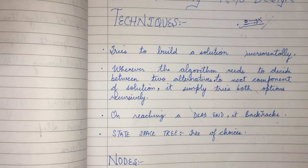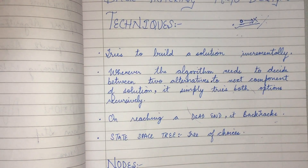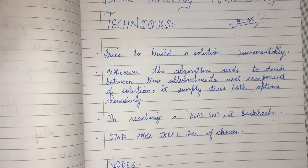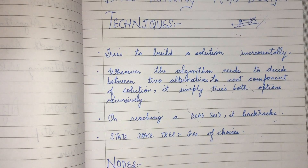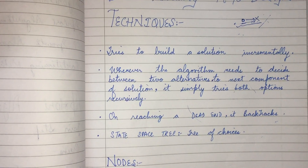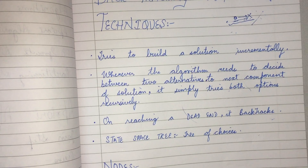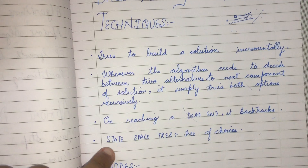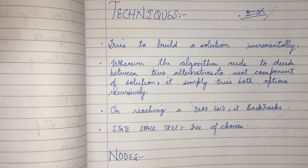To implement backtracking, we build a state space tree — a tree of choices. It works on two choices: yes or no. Yes means this will give me an answer, so move further; no means this will not give an answer, so backtrack. Once the tree is generated for any problem, the problem can be solved systematically and all solution states can be determined from the state space tree.